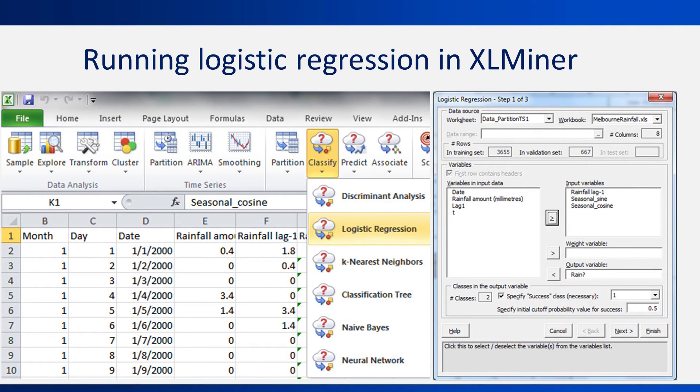To run logistic regression in XLMiner, use the Classify menu. This menu includes different models for predicting a binary output using cross-sectional data. We choose the variable rain as our output and the three predictors lag1, sine, and cosine as the inputs.